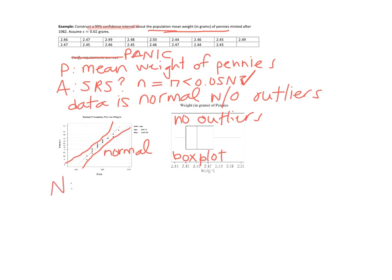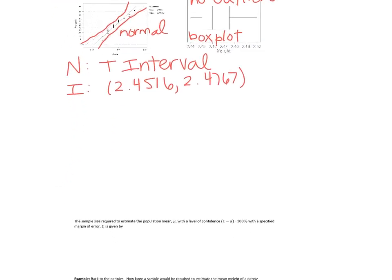Name that test. It's a T interval. We just saw that we're going to use the data, not the statistics option. We're going to use data, since we have this list. And we saw that our confidence interval was this.